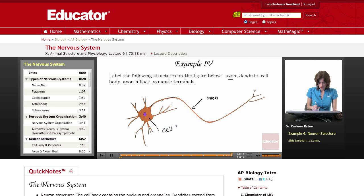Cell body. The cell body is where the nucleus and organelles of the neuron are located.